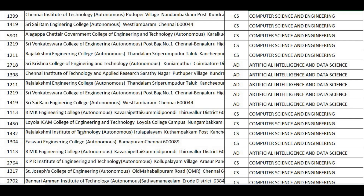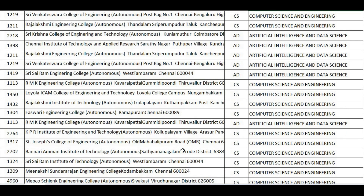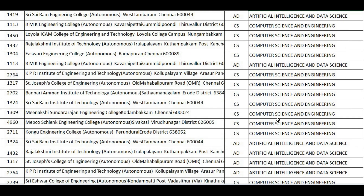RMK, Loyola, RIT, Easwari, RMK Engineering College — AIDS. KPR, St. Joseph — CSE. Bannari Amman — CSE. Sairam Institute — CSE. Meenakshi Sundararajan — CSE. MEPCO — CSE. Kongu — CSE. And then you can again go for AIDS: Sairam Institute — AIDS. This is irrespective of all communities. Cutoff starts from 200 maximum down to 160. For OC, BC, BCM, MBC, SC — you can go for AIDS with a 160 to 150 cutoff range.